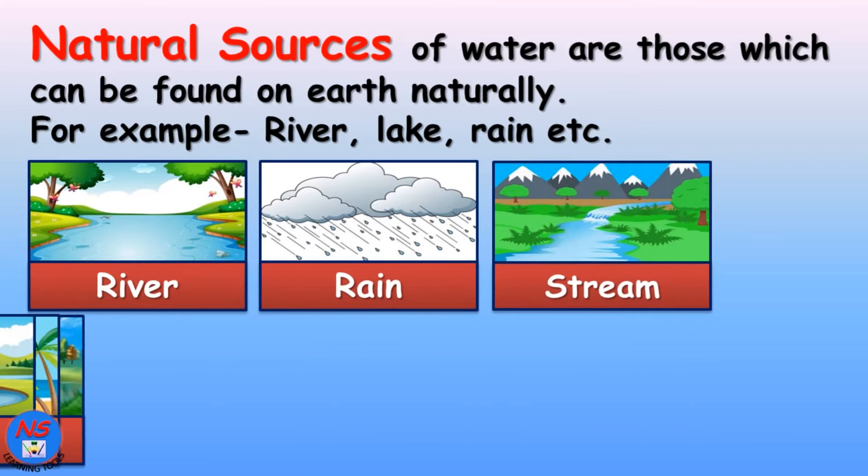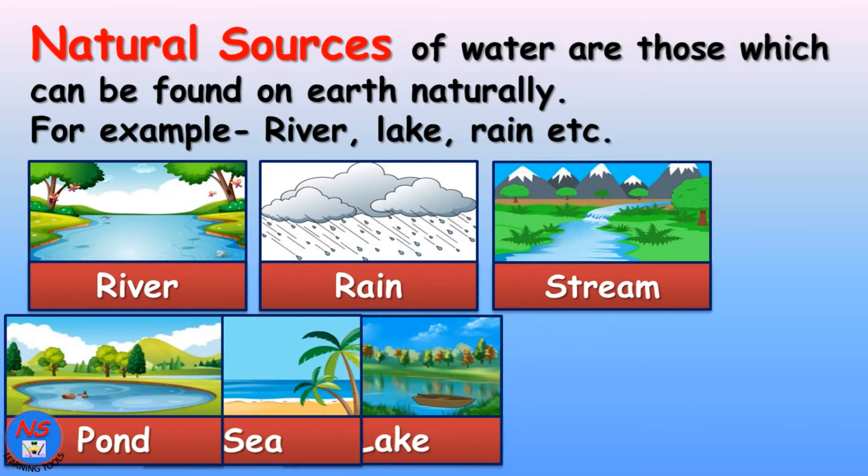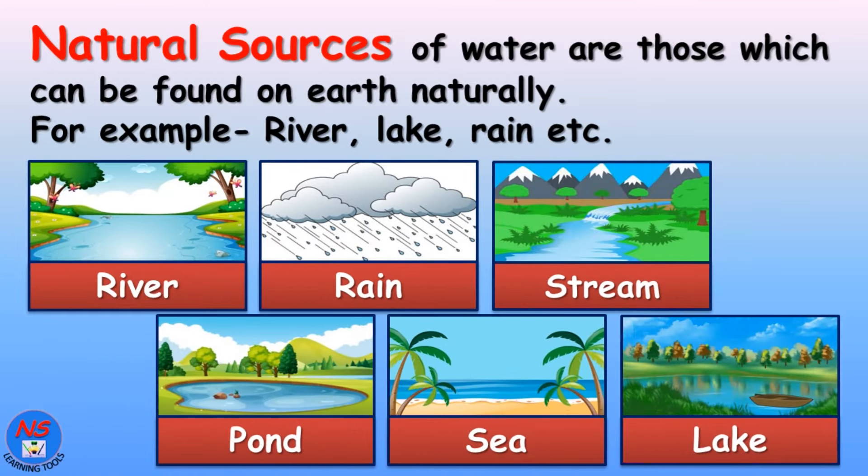Natural sources of water are those which can be found on earth naturally. For example, river, lake, rain, etc.